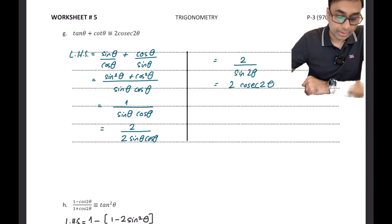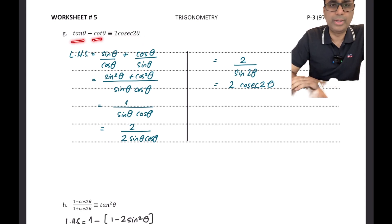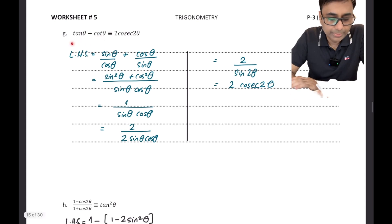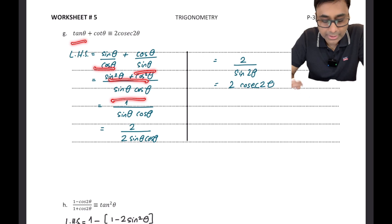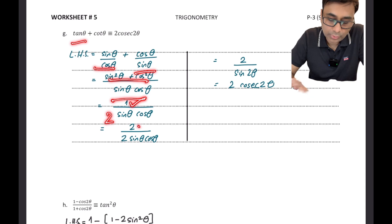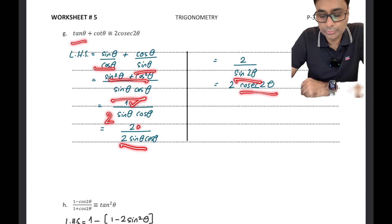Another example: prove tan θ + cot θ = 2 cosec 2θ. I replace tan θ by sin θ/cos θ and cot θ by cos θ/sin θ. Taking an LCM, sin²θ + cos²θ = 1. Since I need the double angle formula and there is a 2 missing, I multiply and divide by 2, so the denominator becomes sin 2θ, which gives 2/sin 2θ = 2 cosec 2θ.